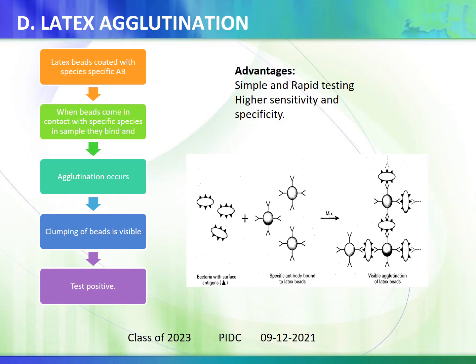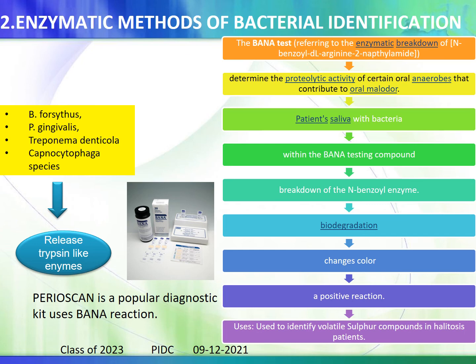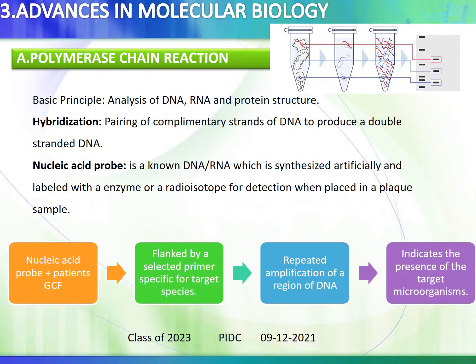The most used enzymatic method of bacterial identification is the BANA test. BANA refers to the enzymatic breakdown of BANA (benzoyl-arginine to naphthylamide), determining the proteolytic activity of certain anaerobes that contribute to malodor. The patient's saliva with bacteria is added to the BANA testing compound; enzymatic breakdown results in a color change indicating a positive reaction. It identifies volatile sulfur compounds in halitosis patients. The four bacteria producing trypsin-like enzymes using this mechanism are P. gingivalis, T. denticola, and Capnocytophaga species. Perioscan is the chairside kit using the BANA reaction.